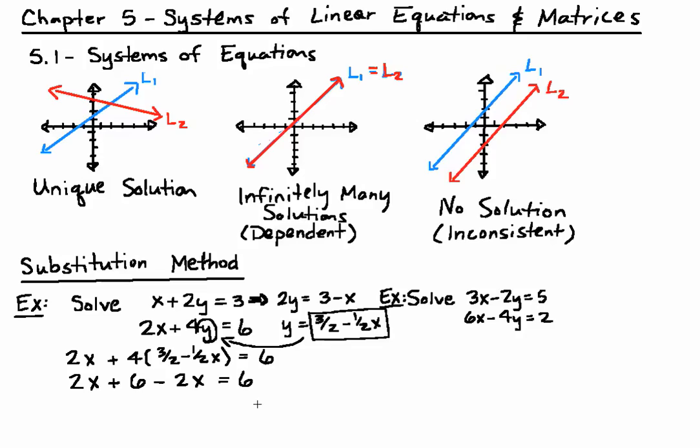And now notice what happens with the variable term. We have a 2x and a minus 2x. Those cancel out. And all we're left with is 6 equals 6.